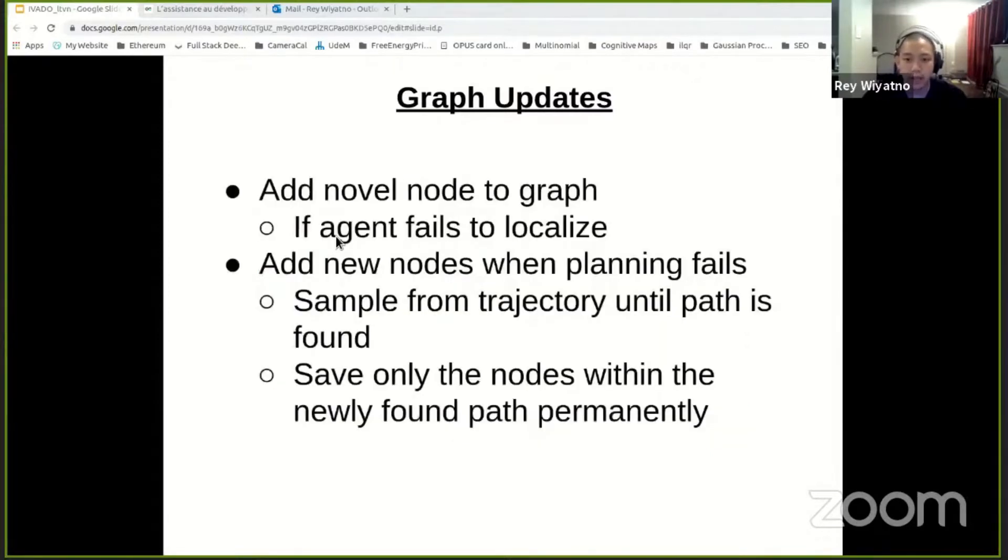We also propose to add new nodes to the graph when observation is novel. So concretely, an observation is considered novel when we fail to localize it on the graph. And the second is when we are unable to find a path during navigation, we iteratively sample from remaining trajectory nodes until a path is found. And then we only keep the new nodes along the found path and return all the tentative nodes back to tau for future resampling. And note that when we add a new node, we loosen the graph building criteria to increase the chance of adding nodes around sharp turns, which usually is harder to add to the graph.